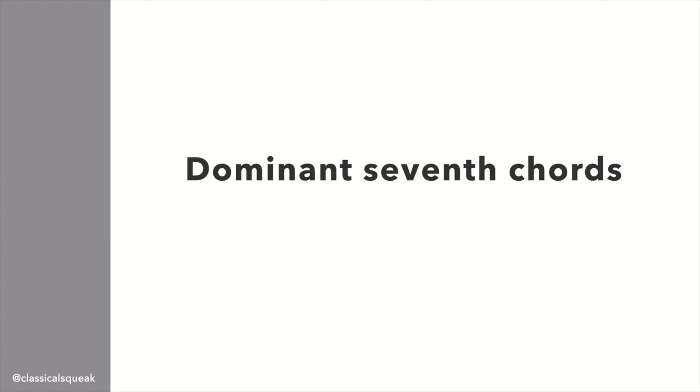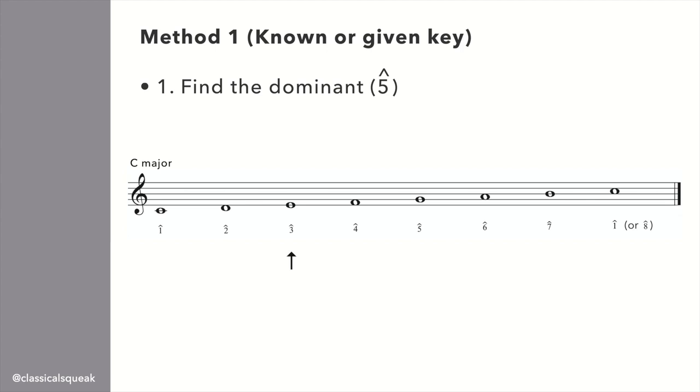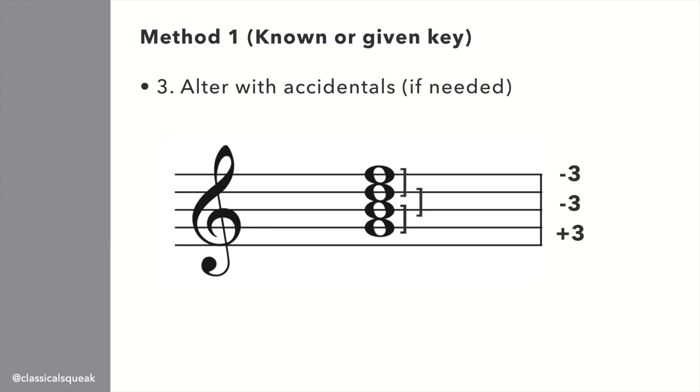Okay, so how can we build a dominant 7th, or some books call it major-minor 7th chord? If we know the key, first we have to find the 5th note of the scale because it's the dominant. For C major, this is G. Then we stack our 3rds again, but we have a 7th, so 1-3-5-7 means 4 different notes. The interval between are a major 3rd, minor 3rd, and minor 3rd. If we're doing it as 3-5-7, we have a major 3rd, perfect 5th, and minor 7th. Or, a major triad with a minor 7th on the outside.